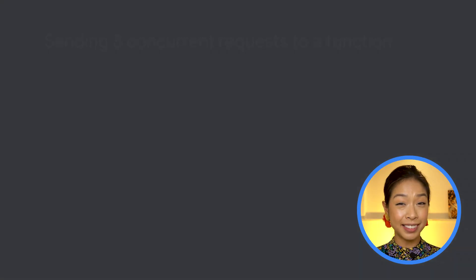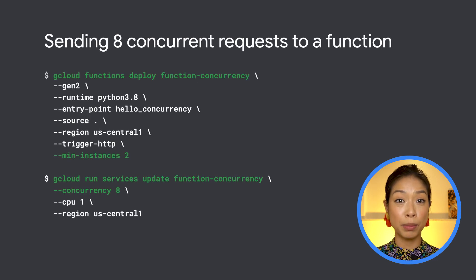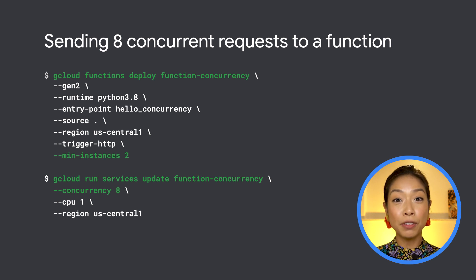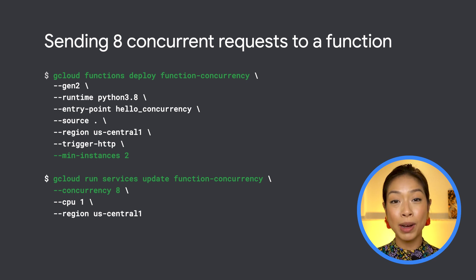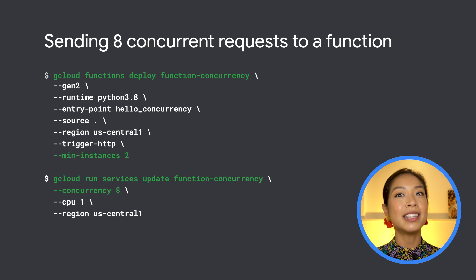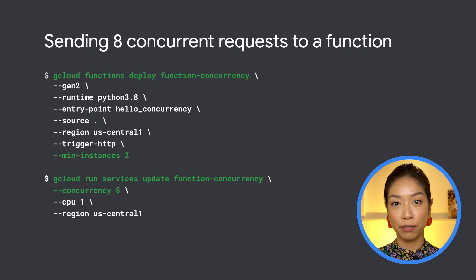To use this pattern, all you have to do is add the min-instances parameter when deploying the Cloud Function. Cloud Functions Second Gen can support up to 1,000 concurrent requests, but this maximum varies by language runtime, so it's advised you review the documentation for the language you plan to use.